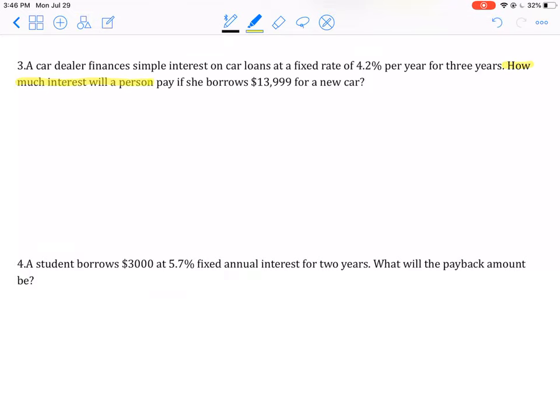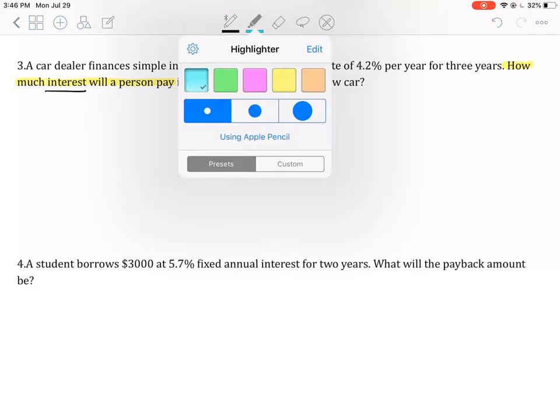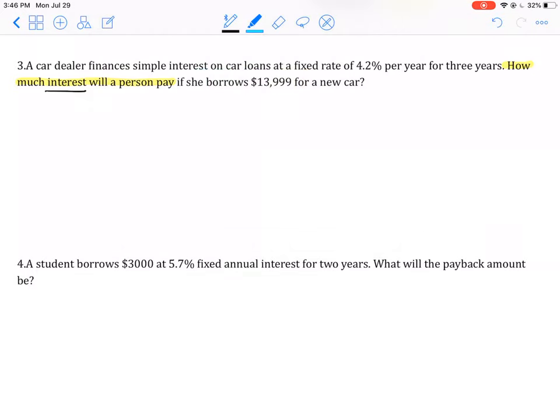How much interest will a person pay? That's the question. The bare bones is the word interest. So let's back up into our problem and see what we have. I see 4.2%, I see the principal. I need time for us to be able to do this and there it is, 3 years.